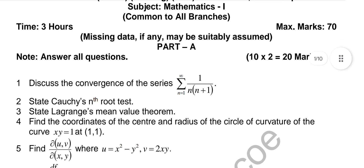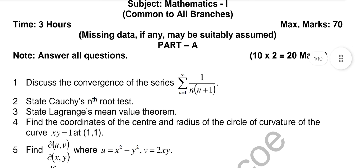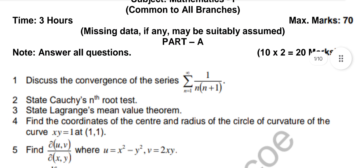Question number one: discuss the convergence of the series — for that we have to use the comparison test. He's also asking the definition of Cauchy's nth root test, just the statement. For sequences and series we have seven testers: geometric series test, P-test, auxiliary series P-test, comparison test, D'Alembert's ratio test, logarithmic test, Cauchy's nth root test, and alternating series test. All these definitions you have to learn, as he will ask definitions too.